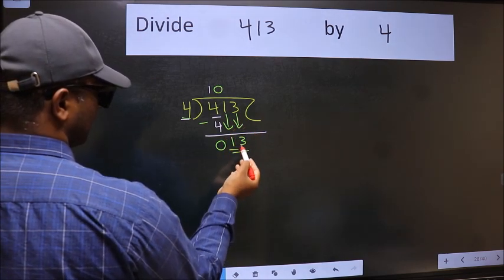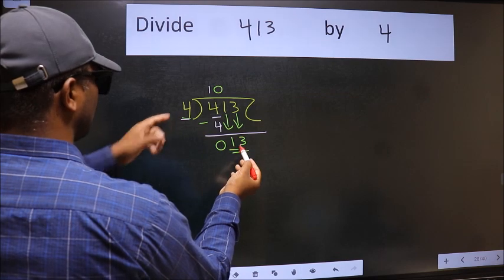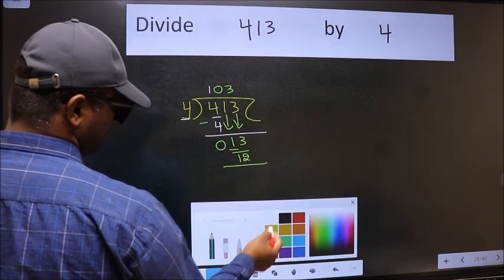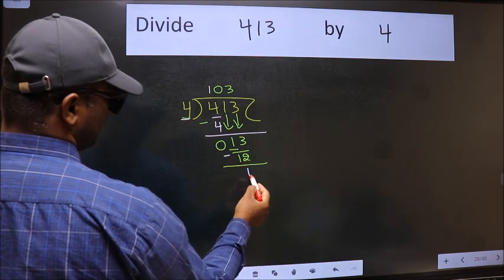Now 13. A number close to 13 in 4 table is 4 3's 12. Now we should subtract. We get 1.